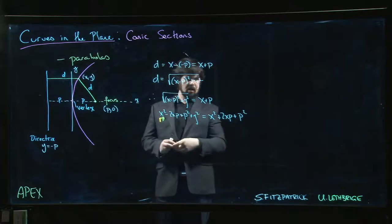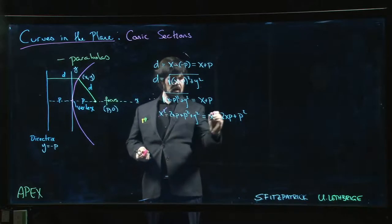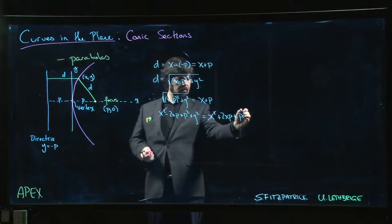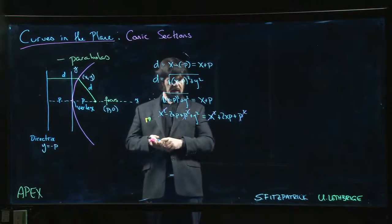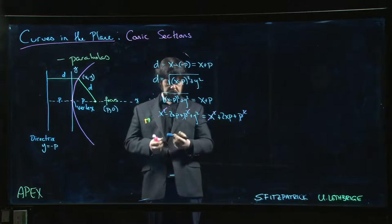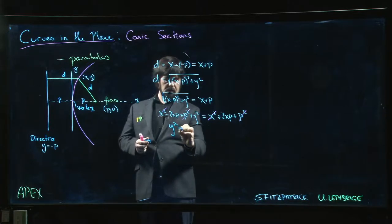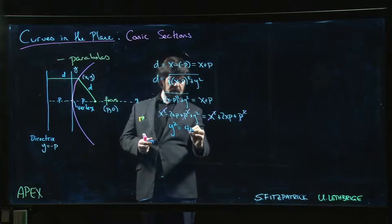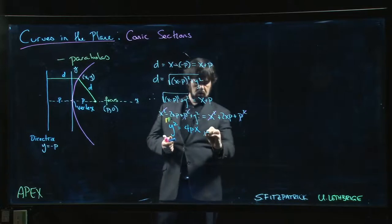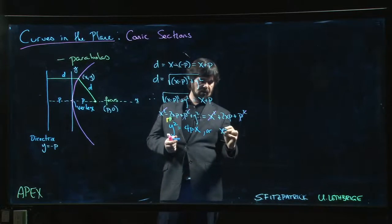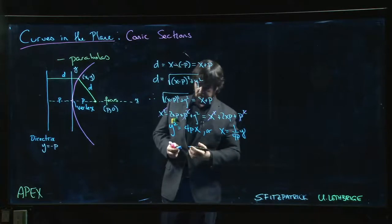And now we can see that there's some cancellation that goes on. x squared, x squared, p squared, p squared. And what we actually get is simply we get y squared is equal to 4px. We can write it like that. Or you could write it as x is equal to 1 over 4p times y squared.